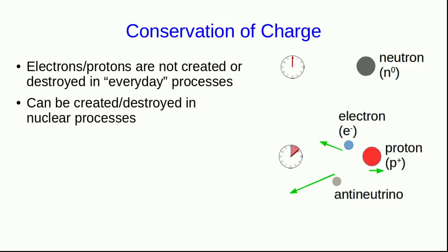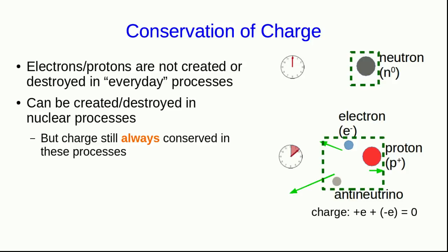Similarly, in neutron decay, the charge is initially zero because the neutron has no charge. And after the decay, there's a proton with plus one fundamental charge unit, an electron with negative one fundamental charge unit, and an antineutrino which is uncharged. And so once again the charge is zero both before and after the process. And these are just some examples. Charge is always conserved in these processes. We have never observed any process which violates conservation of charge.